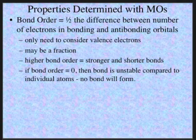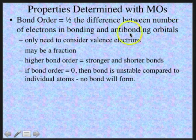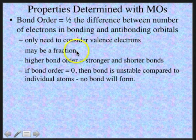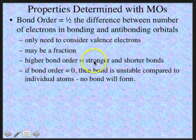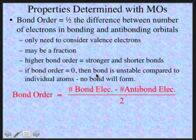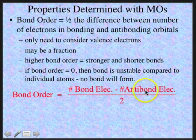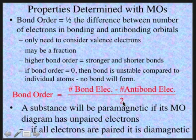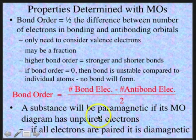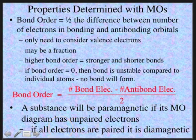Electrons in anti-bonding orbitals cancel stability gained by electrons in bonding orbitals. There are certain properties that can only be determined with molecular orbital theory. Bond order equals one half the difference between the number of electrons in bonding and anti-bonding orbitals — we only consider valence electrons, and the bond order may be a fraction. The higher the bond order, the stronger and shorter the bonds. If the bond order is zero, the bond is unstable and no bond forms. A substance is paramagnetic if its MO diagram has unpaired electrons; if all electrons are paired, it is diamagnetic.